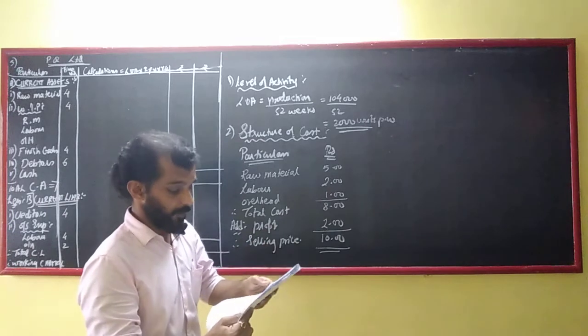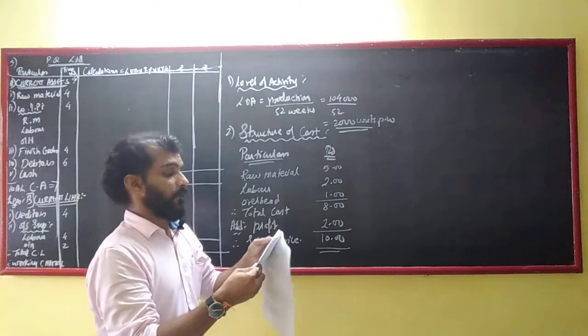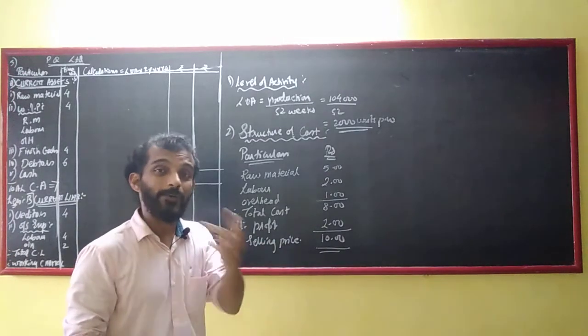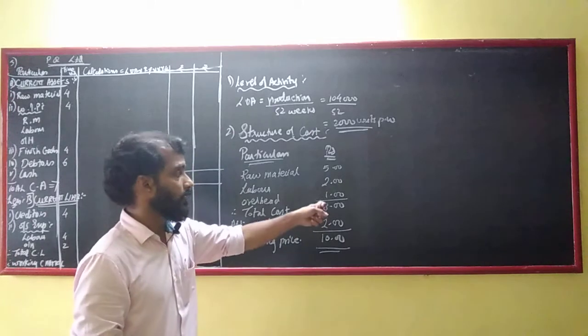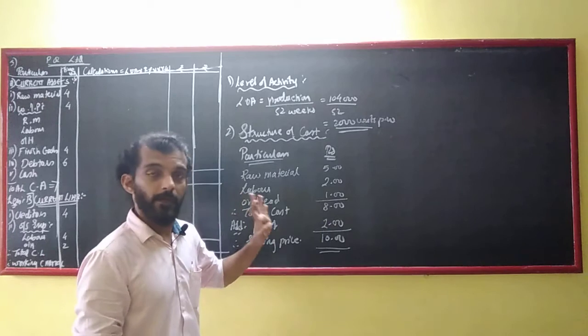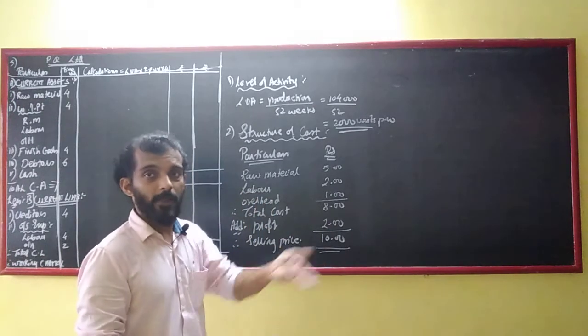What are we doing? Let us see. Profit per unit is 200% of overhead, so that is 2 rupees. My selling price will be Rs.10. Now our preparation is complete.